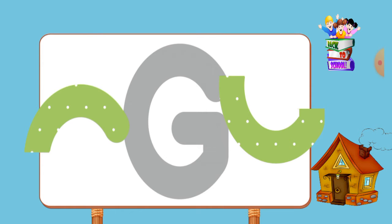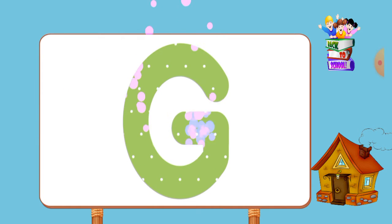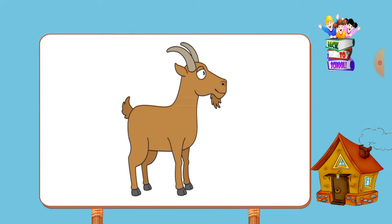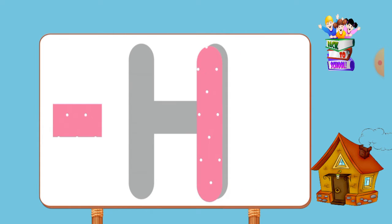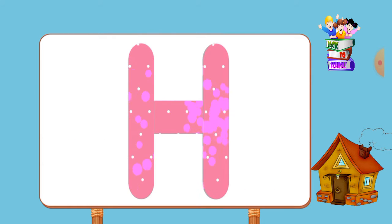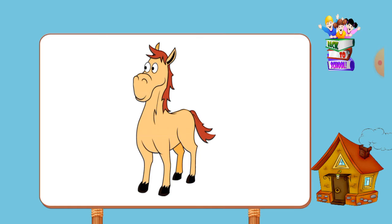Match the pictures to their shadows. G, g, goat. Match the pictures to their shadows. H, h, horse.